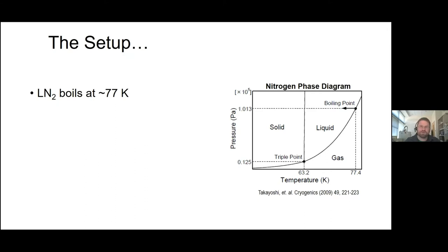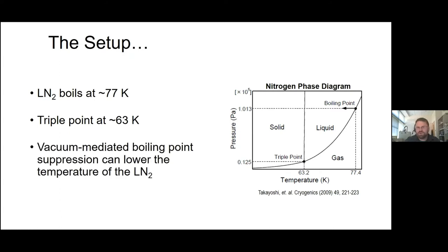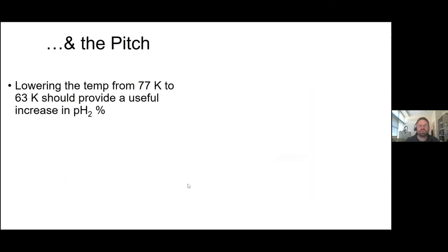Before doing all this, when I was a postdoc, I did some DNP. If you've done DNP, you know the sample has to be really cold. So cold that you use liquid helium to cool it, and even that's not good enough. You pull a vacuum on the liquid helium to lower the temperature just a little bit more. The idea here is can we use that type of approach to lower the temperature of liquid nitrogen using a vacuum pump to get closer to the triple point. When you can get that liquid nitrogen a little bit colder, you should be able to generate some useful increase in the amount of parahydrogen.